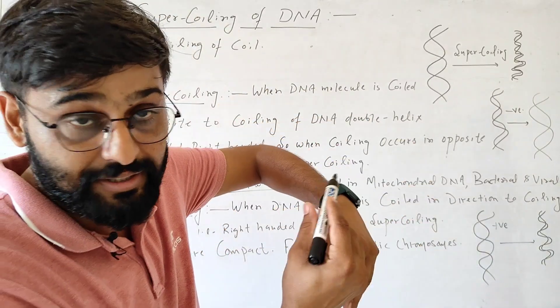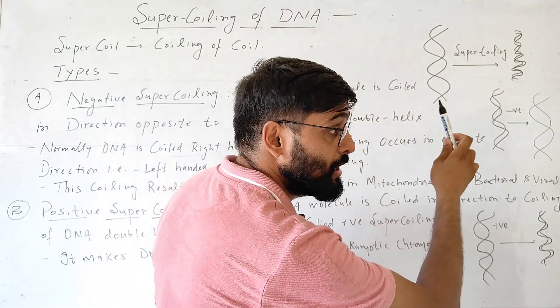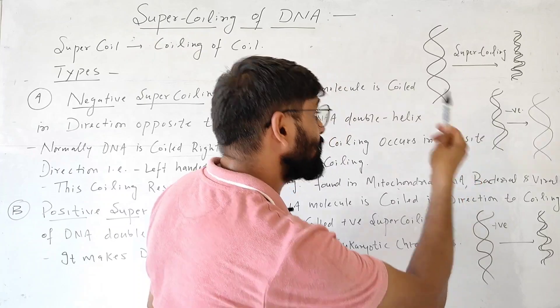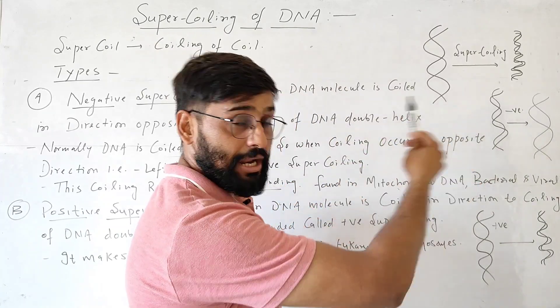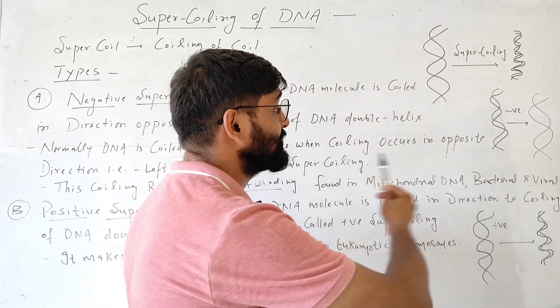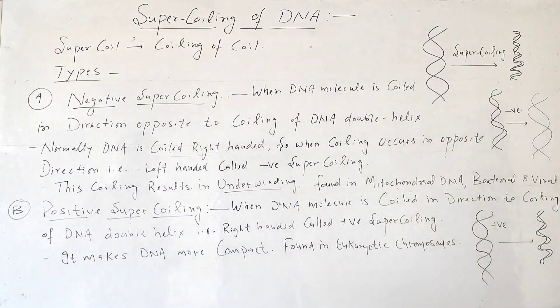Normally DNA is in the right-handed direction — this is right-handed coiling. When coiling occurs in the left-handed direction, then it is called negative supercoiling.